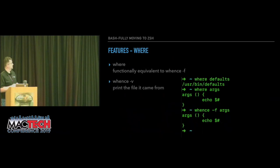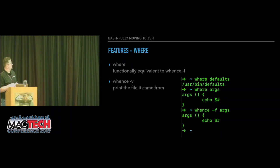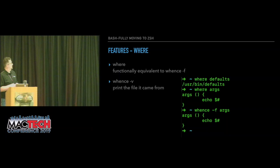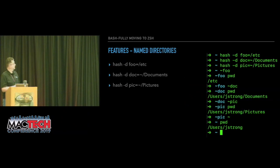The `where` command is really helpful when you're trying to find exactly where a certain command or function is being called from. Essentially there's another command called `whence`, and `where` is `whence -f` as a wrapper. If you use the `-f` flag, it'll print out the entire function for you — this can be helpful to figure out exactly which function is being called and what it looks like.